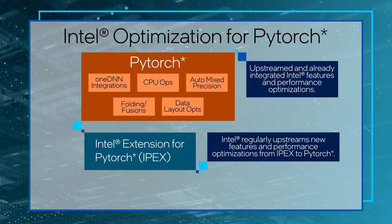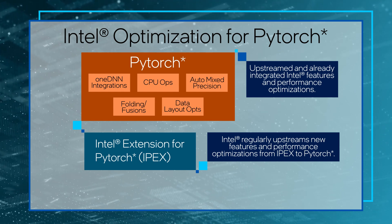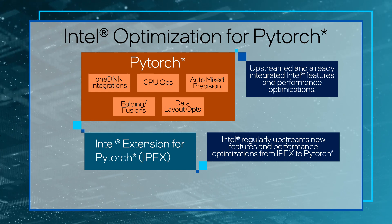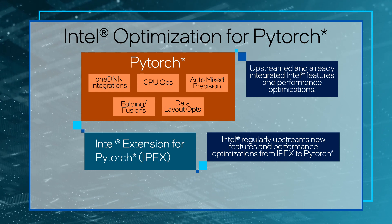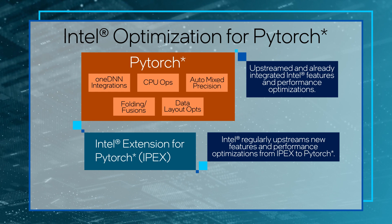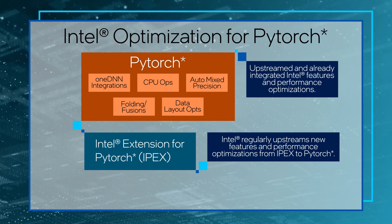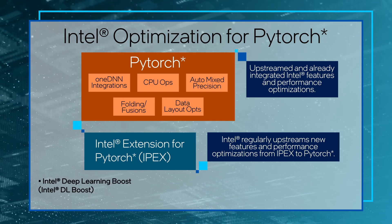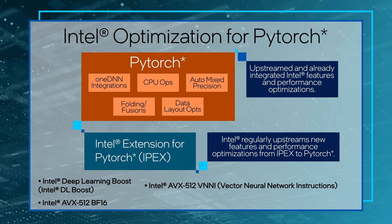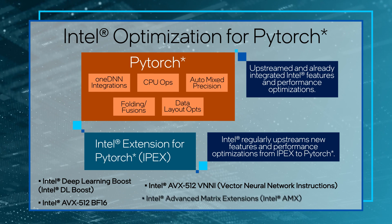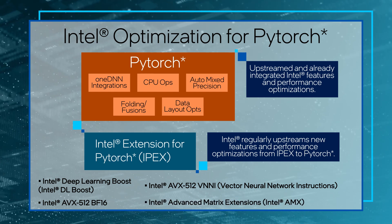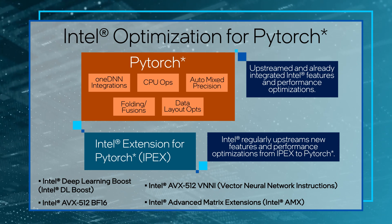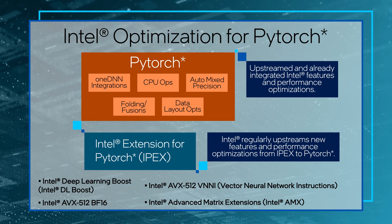Let's focus on upstreamed optimizations first. In collaboration with Meta, Intel regularly upstreams software optimizations designed to improve the performance and scalability of PyTorch. For example, optimizations in the OneDNN library leverage Intel hardware features such as specific instruction sets like Intel Deep Learning Boost, including Intel AVX-512 VNNI, Intel AVX-512 BFloat16, and Intel Advanced Matrix Extensions. Other optimizations include customized data layouts, kernel optimizations, mixed precision support, and some graph transformations.